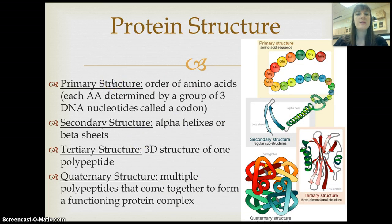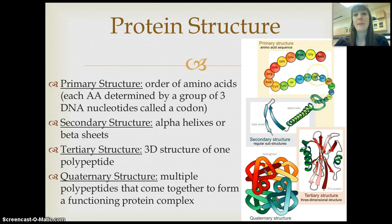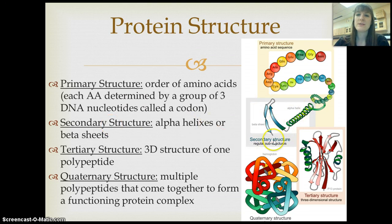The primary structure is going to be just the order of those amino acids and the way they're put together. There's going to be a linkage via dehydration synthesis that puts them all together. They're also formed by groups of three DNA nucleotides — DNA codes for proteins in groups of three. After that, depending on the order of those amino acids, the side chains start to chemically interact. If they form a spiral, it's called an alpha helix; if they form a back-and-forth sheet, it's called a beta-pleated sheet. That's our secondary structure.